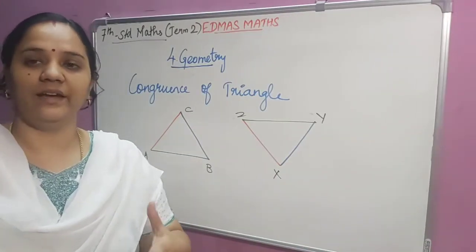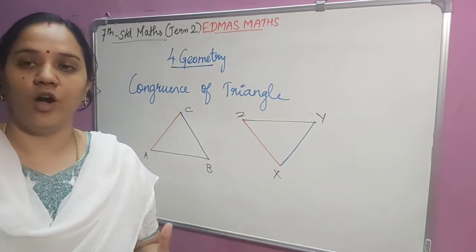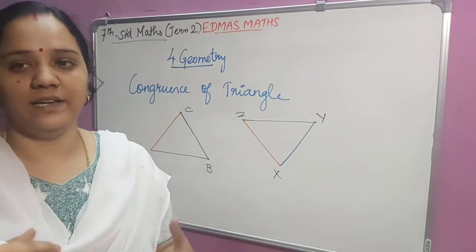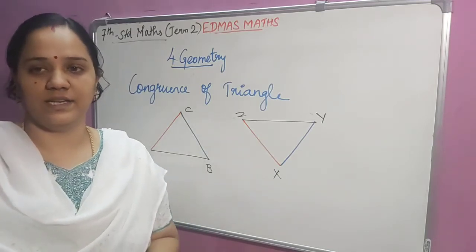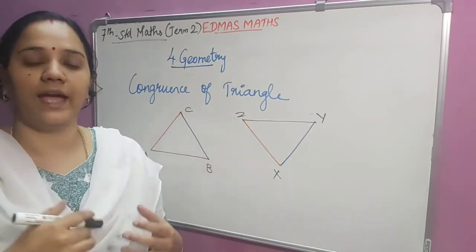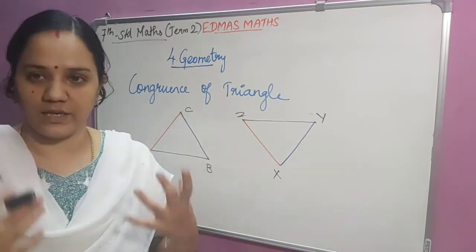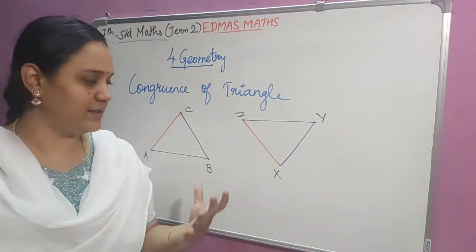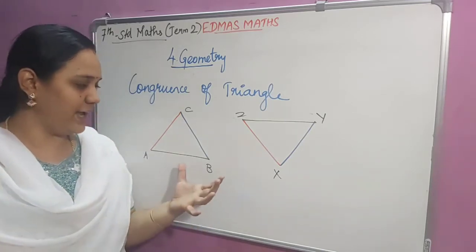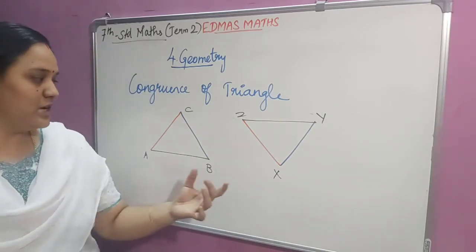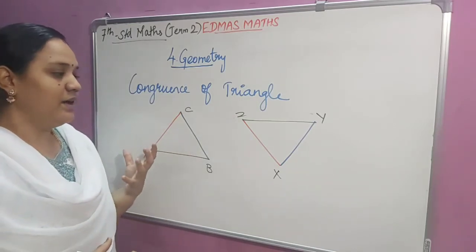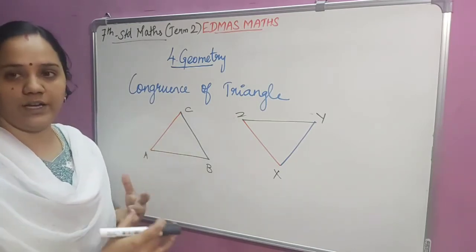We know that a triangle is a closed figure formed by three line segments. There are three sides and three angles in a triangle. If the corresponding sides and corresponding angles of two triangles are equal, then we can say that these two triangles are congruent to each other. Here I have drawn two triangles using different colors to represent the equality of the sides.